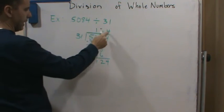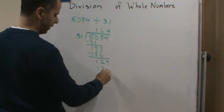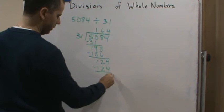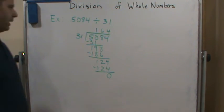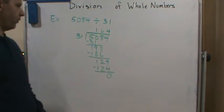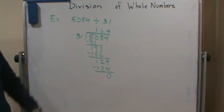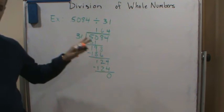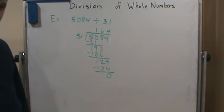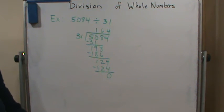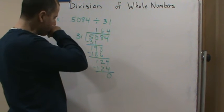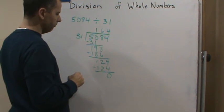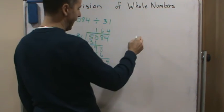And now I'm going to do this process again. 31 goes into 124 four times. So 31 times 4 turns out to be 124, and I get a remainder of 0. And so now the answer is 164. So 5,084 divided by 31 is 164, which is pretty close to what my estimate was, about 166. Okay, so now what do I have to do? Check, right?